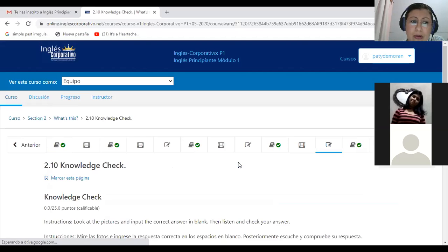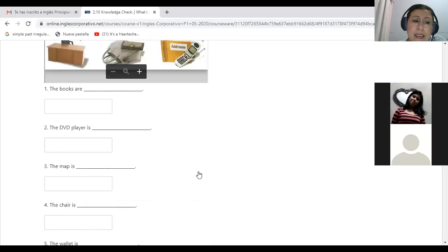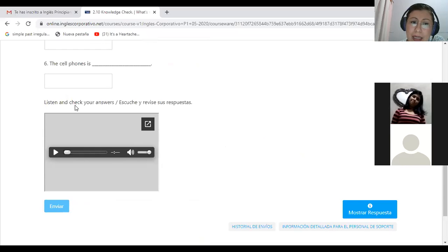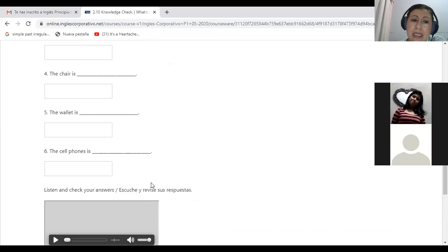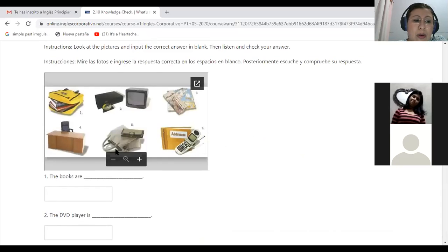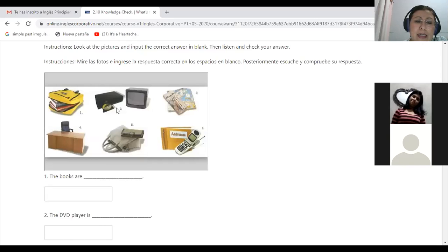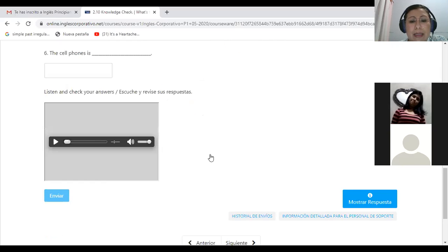We are going to start with the 2.8. In the lesson objective of 2.8, it says, in this class you will learn how to use prepositions in order to describe the location of different objects. So you will have here a platform. In the platform you will have a video about prepositions of place, behind, on, in, next to, in front of and under.